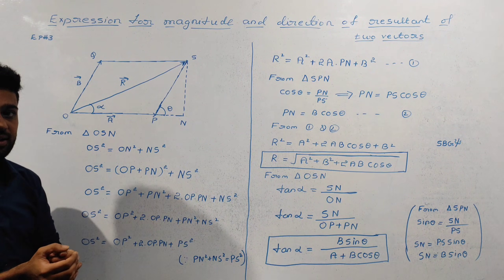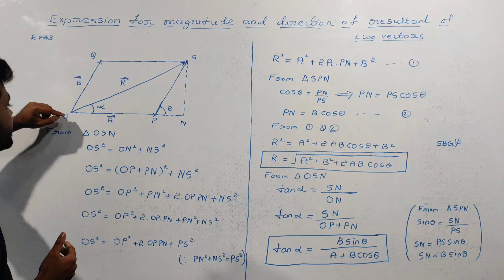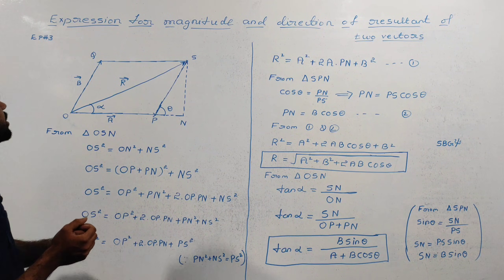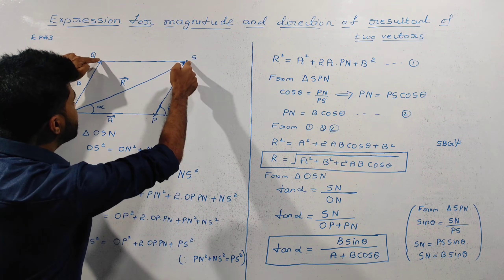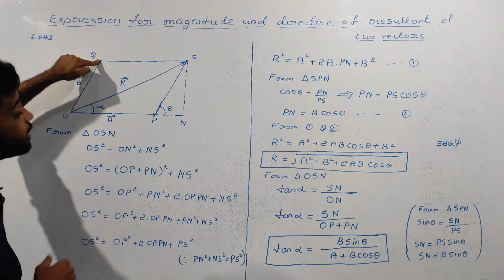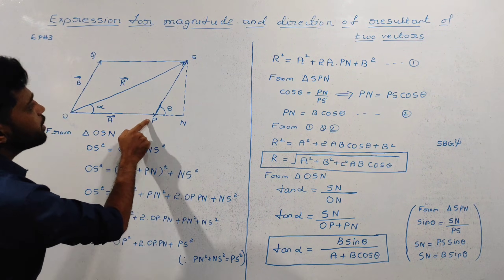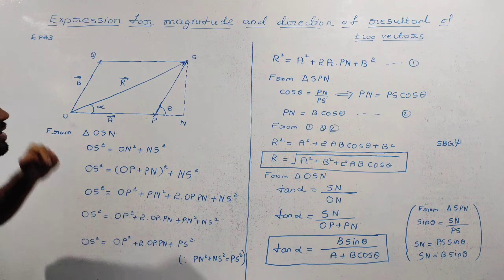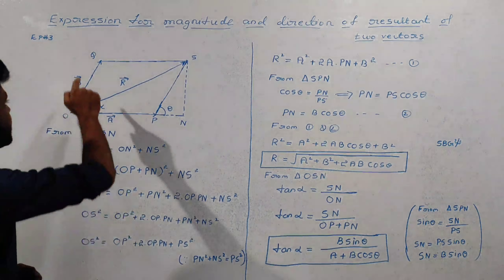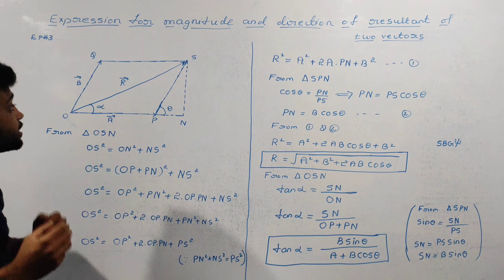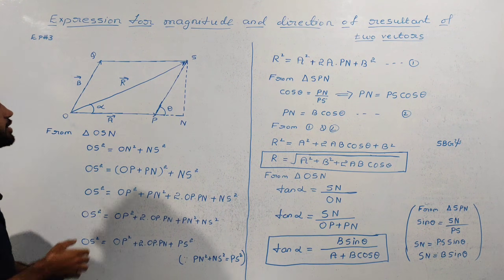These two vectors form a parallelogram, with adjacent sides along the vectors. The lines PS and QS complete the parallelogram shape. The resultant is OS, the diagonal of the parallelogram, represented as vector R.